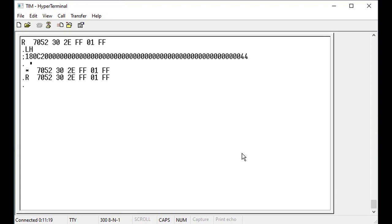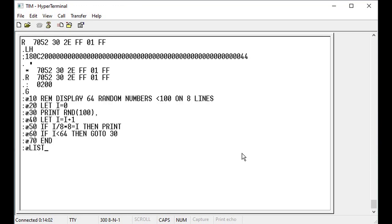After the interpreter has loaded, the cold start address is 0200 and the warm start address is 0203. The warm start address is handy if you have to exit TinyBasic but want to re-enter the interpreter without having to re-type your BASIC program.